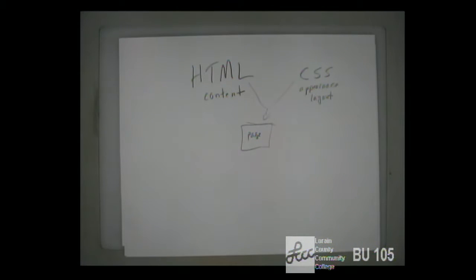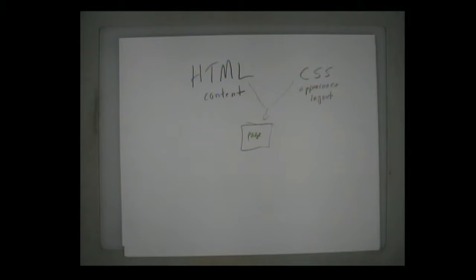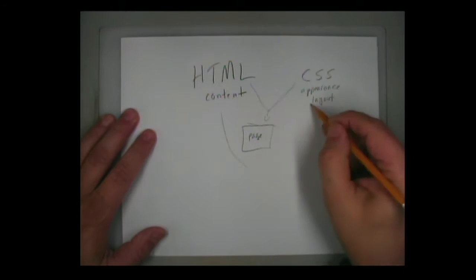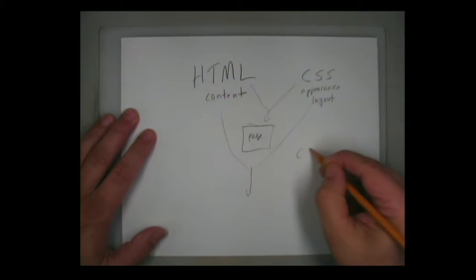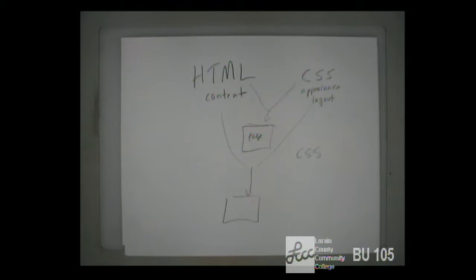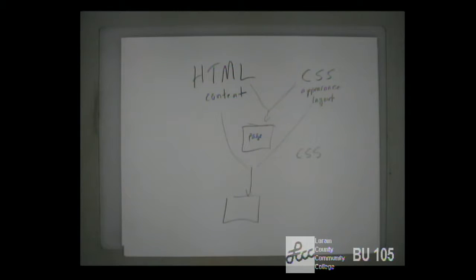We then went on to say that we could easily apply different CSS files to the same HTML and get a page that looked a lot different. We could have CSS1, a different CSS, and a different appearance. We saw that both in our own work — you had to do two style sheets for the same web page — and we also saw CSS ZenGarden, a great example where the pages look nothing alike yet they're the same HTML with different CSS applied.